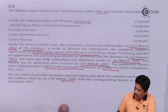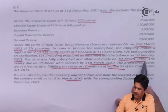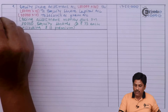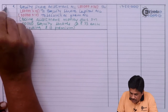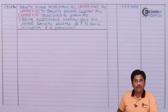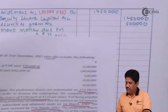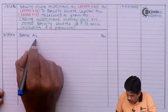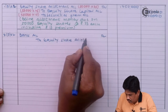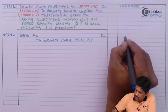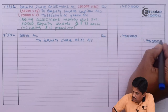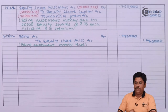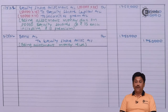Allotment money was received on 31st March 20X2. Allotment was made on 1st March 20X2, so allotment money due date is 1st March 20X2. Allotment money was received by 31st March 20X2. Entry for receipt: bank account debit to equity share allotment account — being allotment money received. In this way we have made a fresh issue for the purpose of redemption.